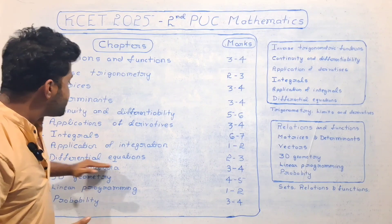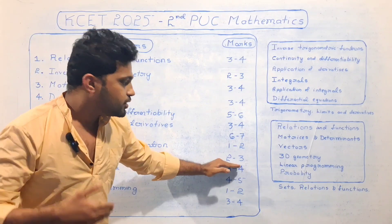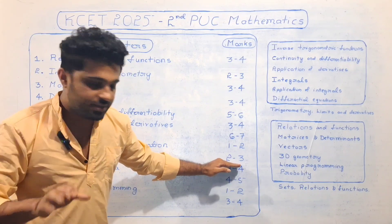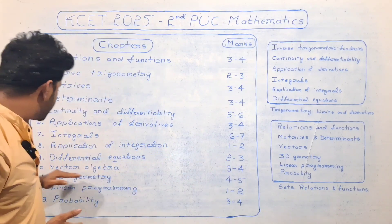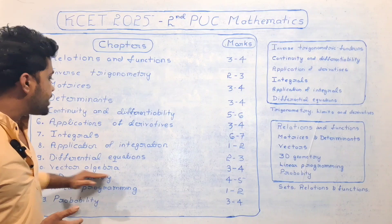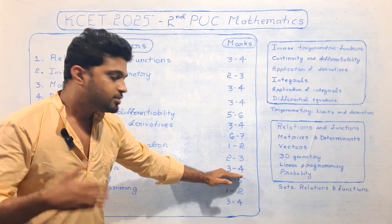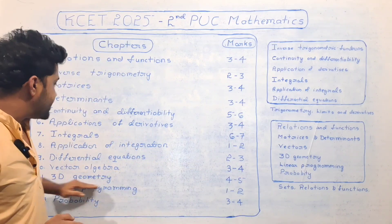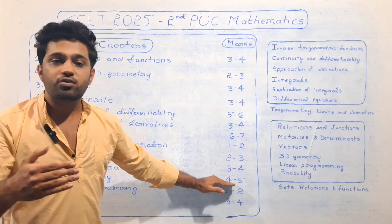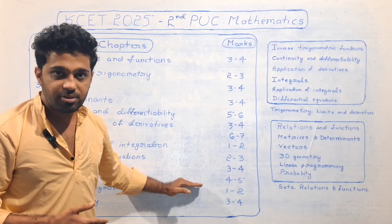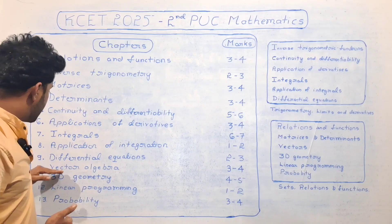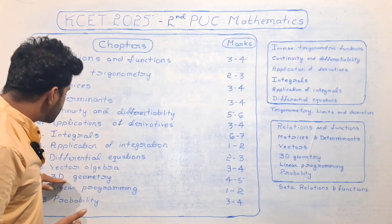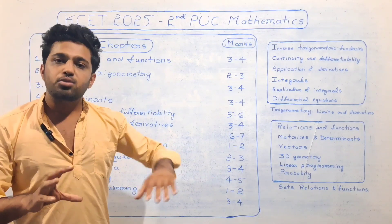Differential Equations carries 2 to 3 marks. Vector Algebra carries 3 to 4 marks. 3D Geometry carries 4 to 5 marks. There is impressive overlap between Vector Algebra and 3D Geometry, so they are important to study together.